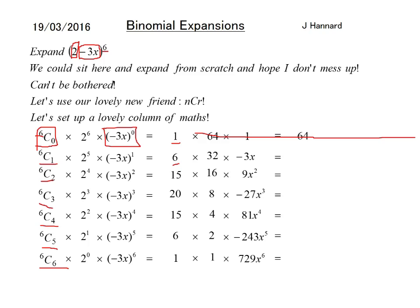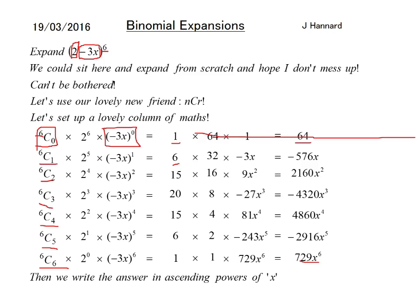And that all equals, times them all together. So you end up with 64, and then 6 times 32 times minus 3, you end up with minus 576X. 15 times 16 times 9 is 2160X squared. And you end up with all that. Check if you want on a calculator, but I believe that is right.